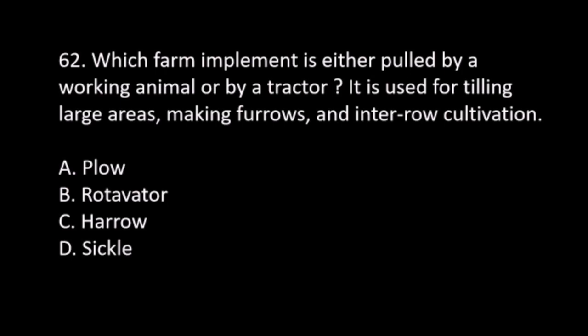Number 62. Which farm implement is either pulled by a working animal or by a tractor? It is used for tilling large areas, making furrows, and inter-row cultivation. A. Plow. B. Rotavator. C. Harrow. D. Sickle. The answer is A. Plow.